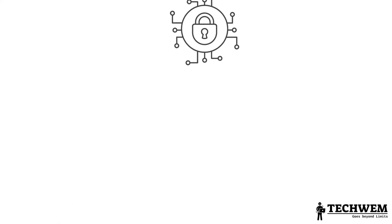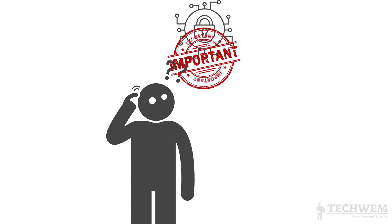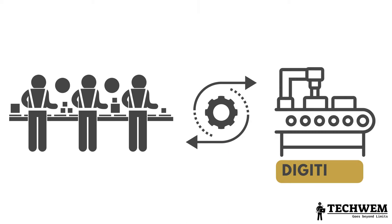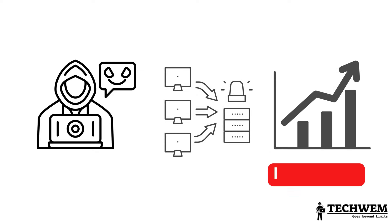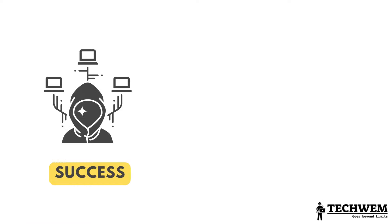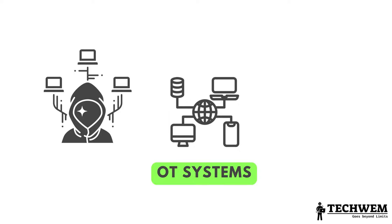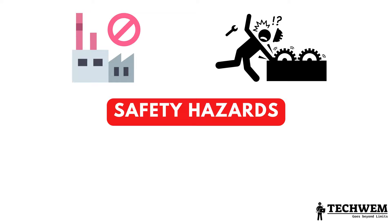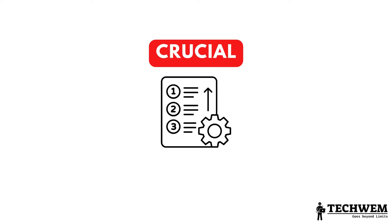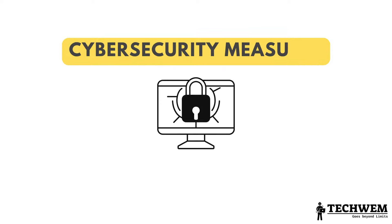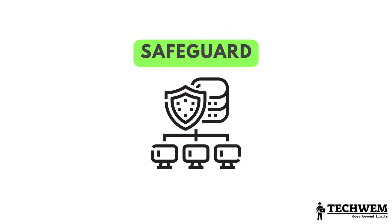Now why is OT cybersecurity so important? As industries become more digitized and interconnected, the risk of cyber attacks targeting these operational systems increases. A successful attack on an OT system can have severe consequences such as operational disruptions, safety hazards, environmental damage and financial losses. Therefore, it is crucial to have robust OT cybersecurity measures in place to safeguard these critical infrastructure systems.